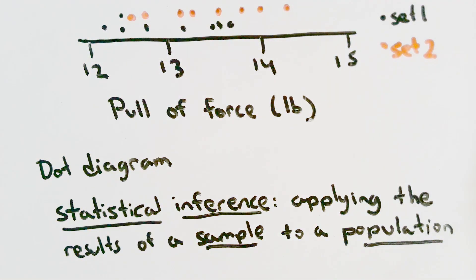When I say sample, I mean a specific set of measurements, such as the measurements in set 1 and set 2 in our dot diagram. And when I say population, I mean the general cases where the results of this sample will be applied to. For example, if these measurements were for prototypes of the engine setting, the population will refer to all the engines that will be sold.